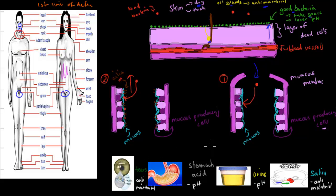We also have other chemical barriers — all of these would be non-specific examples of first-line defense. For example, tears have antimicrobial properties to make sure they can kill off any bacteria on our eye. Stomach acid lowers the pH, which means many of the bacteria will be denatured, or many pathogens will just die from that low pH. Urine also has a low pH, so when we urinate we kill off any pathogens at our genitalia. And saliva has antimicrobial properties. So all these would be examples of chemicals that we produce to try to make sure pathogens can't get into our blood.